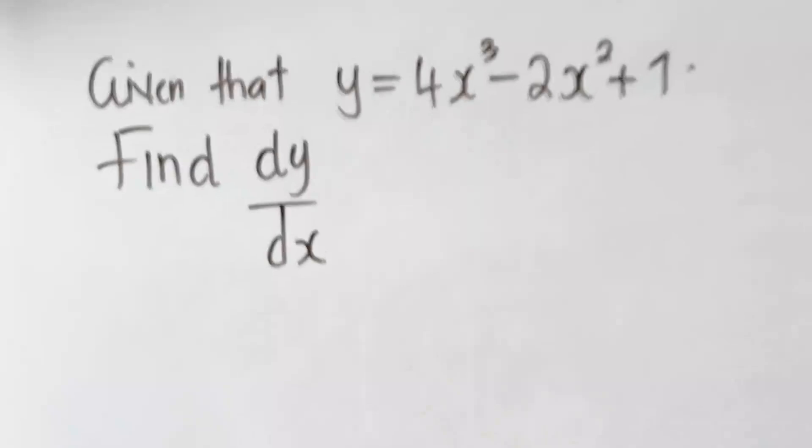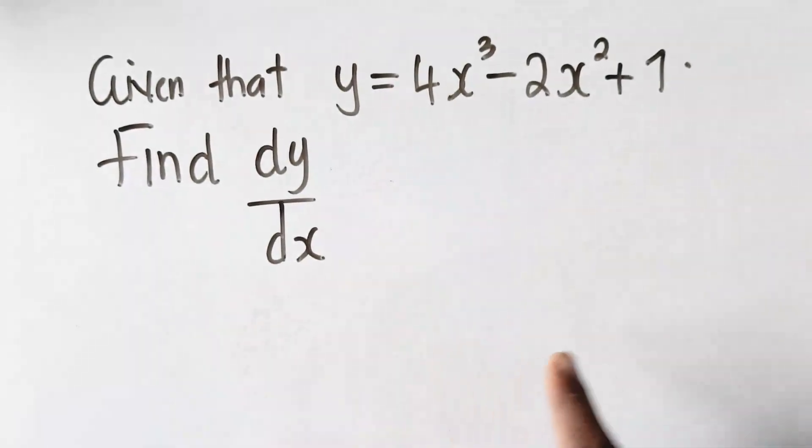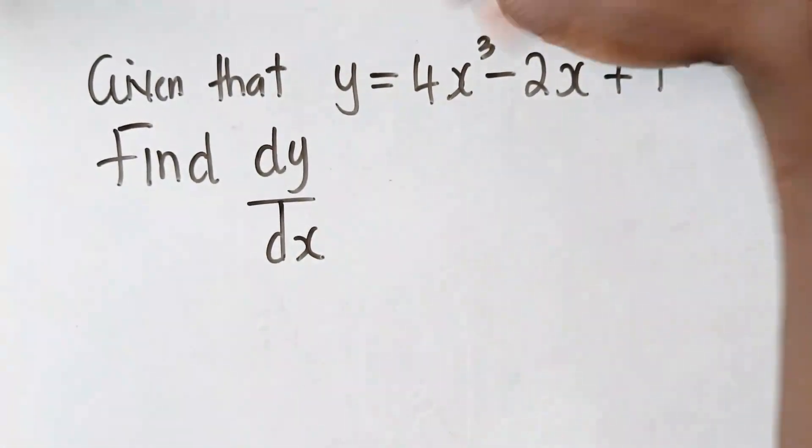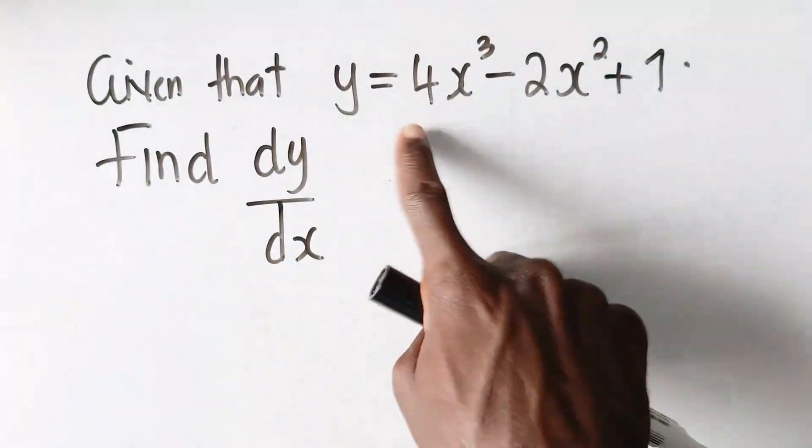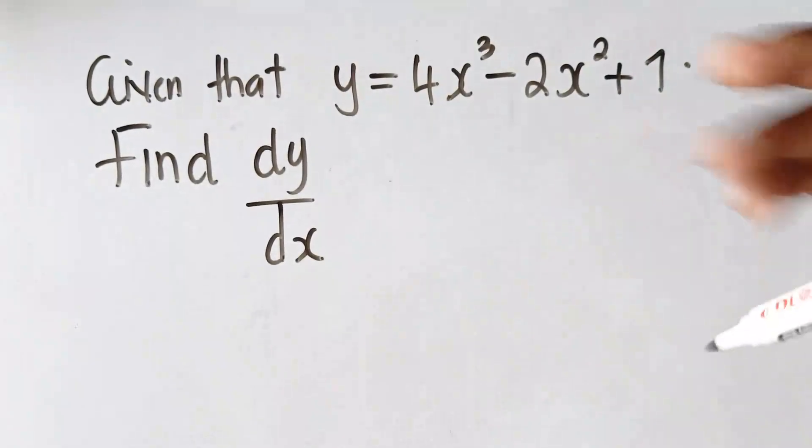Any time you're asked to find dy dx, in short, we are reducing this function by reducing its power by 1. Its power is part of each - this part, that part, and that part - each of these powers is being reduced by 1.